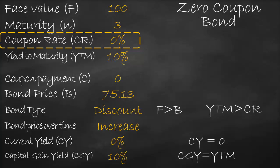It's very important to know the relationships in bond valuation in general and for zero coupon bonds in particular. Zero coupon bonds will always be discount bonds, meaning bond price is always lower than face value, coupon rate is always lower than yield to maturity, bond price increases over time, current yield is always zero percent, and capital gain yield is always equal to yield to maturity. Knowing these relationships can save a lot of calculation time.